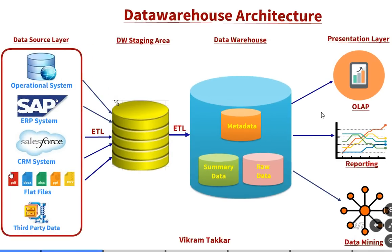This is the typical architecture of a data warehouse. The first layer is the data source layer. A data warehouse is a collection of data from the various data sources of an organization, so all the data sources from which data is extracted come under this layer. Data can be extracted from various sources, for example operational systems such as sales, HR, inventory, and marketing, ERP systems such as SAP, CRM systems such as Salesforce, web server logs, and third-party data such as market research data and survey data.